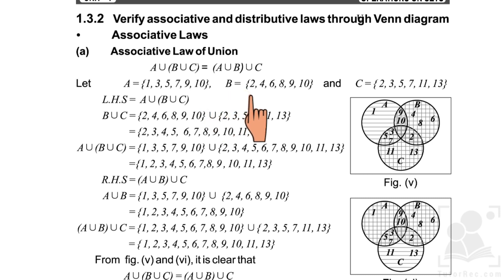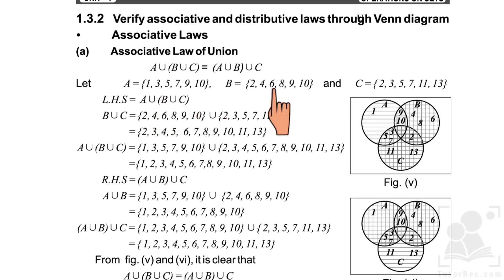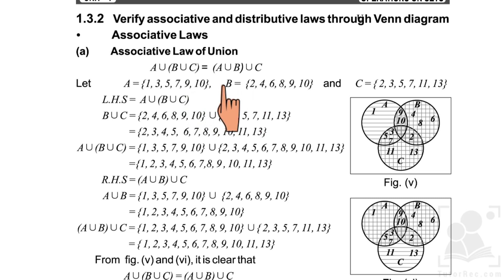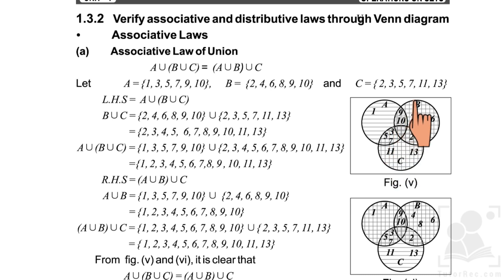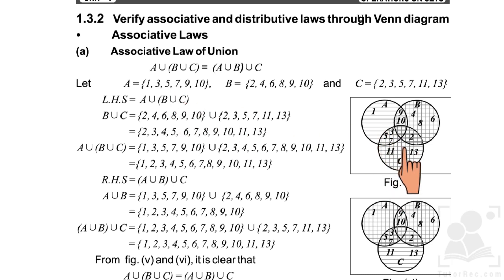Set B has elements 2, 4, 6, 8, 9, 10 and set C has elements 2, 3, 5, 7, 11, and 13. We check which elements are common across all three sets. Element 1 is unique to A. Elements 3 and 7 are shared with C so they are placed at the union of A and C. Elements 5 and 7 also appear in C. Elements 9 and 10 unite with B since B also has 9 and 10.